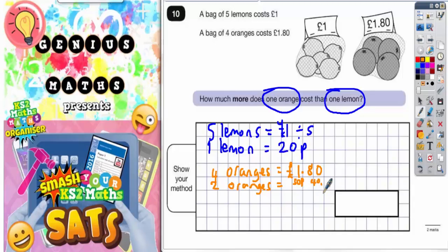50p plus 40p will be 90p, so two oranges is 90p. And so one orange is going to be half of 90p. Well, half of 90p is going to be 45p.